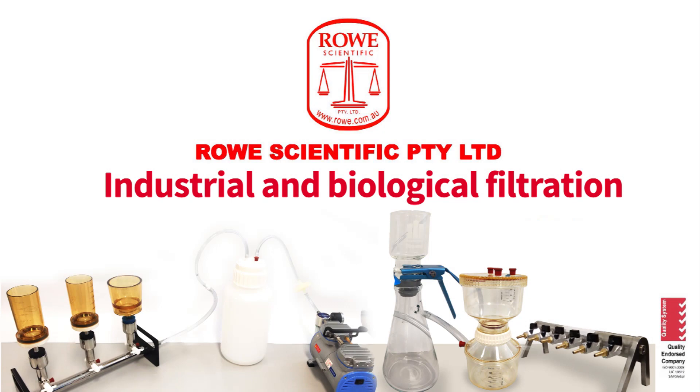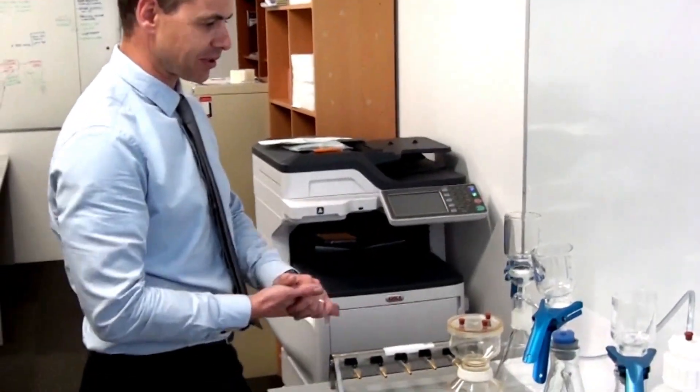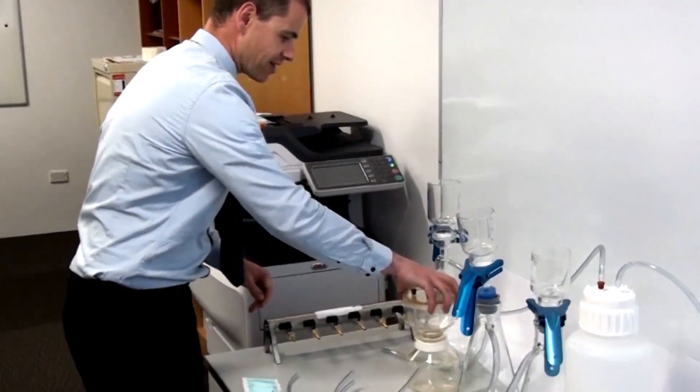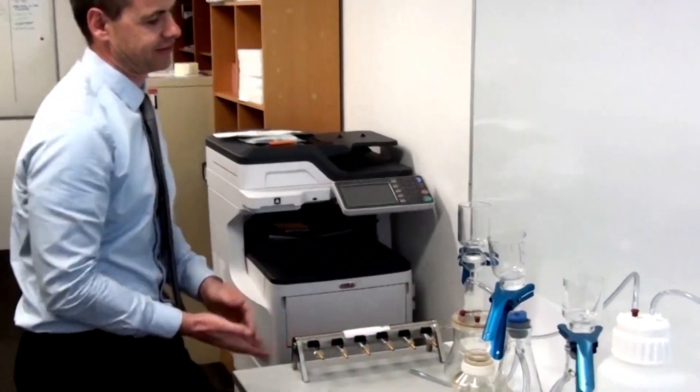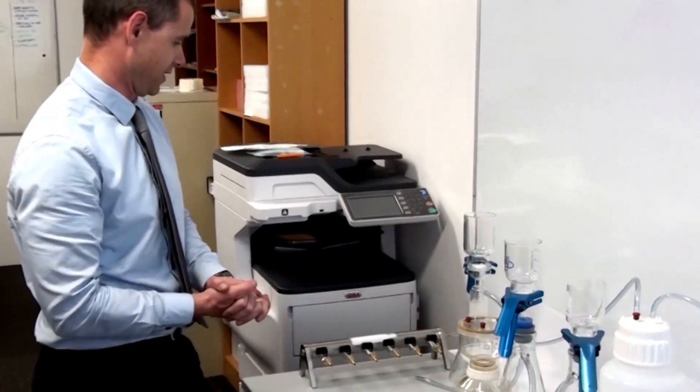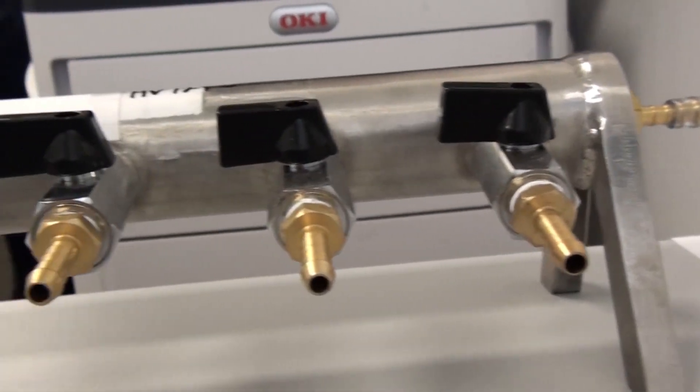Okay, we're setting up the 6-place industrial manifold. I've prepared everything and I'll just quickly run through how we set it up. I've got various filtration setups here, four different types, different brands. So starting with the manifold itself, starting from the left I'll just work through to the right.